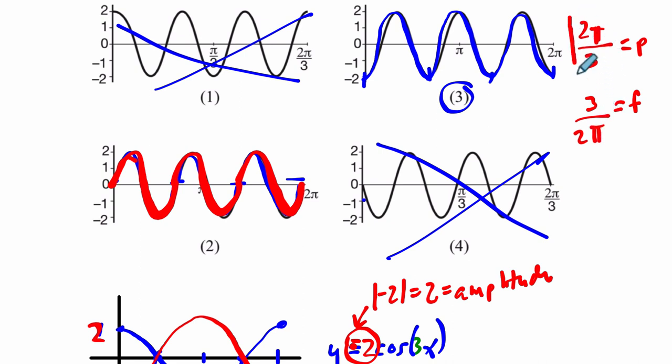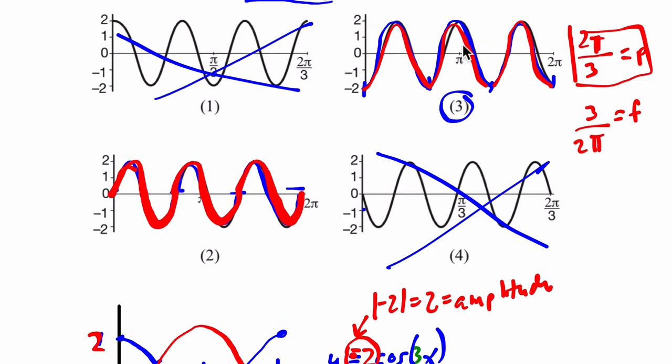But here, right, you can see 2 thirds times 3 is 2. So it takes 1, 2, 3 cycles. It takes 2 pi radians to complete 3 cycles of this wave. All right, I hope that helps.